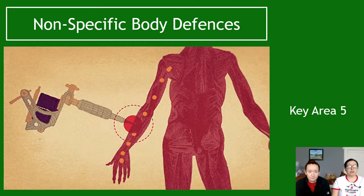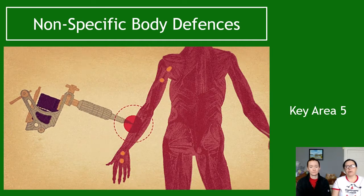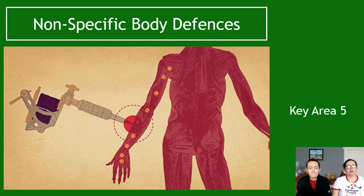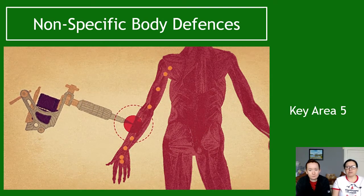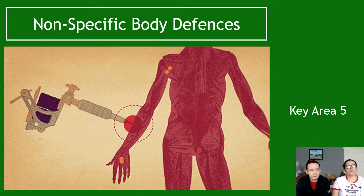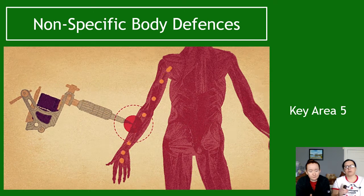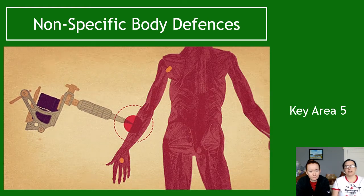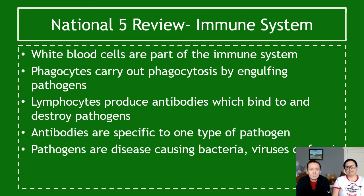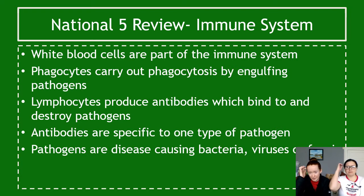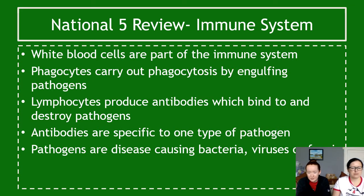Immunology means stuff to do with the immune system — how our bodies defend themselves against diseases and germs and similar things. The first thing we'll be looking at is Key Area 5. It's only one video because it's a relatively short topic, and that's non-specific body defences.